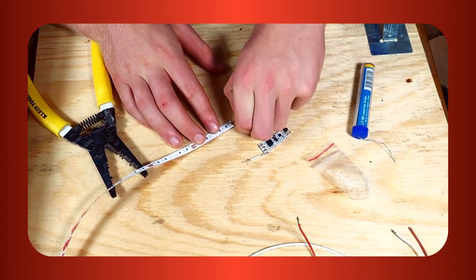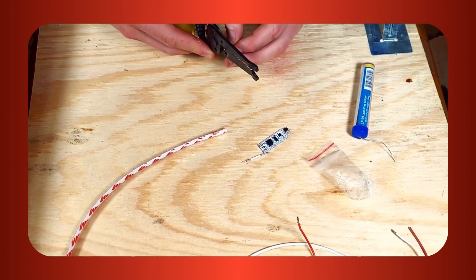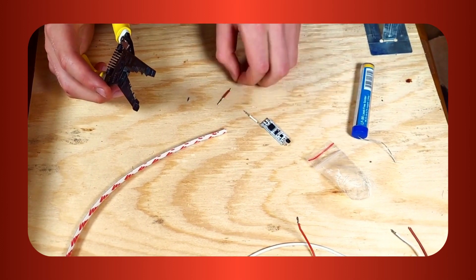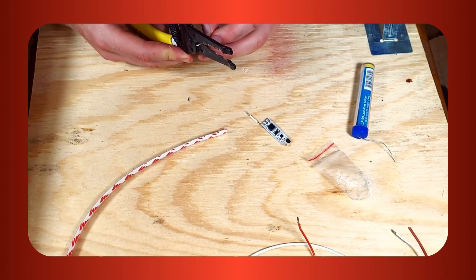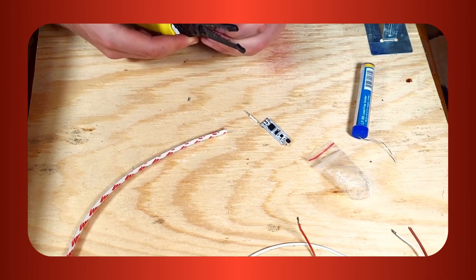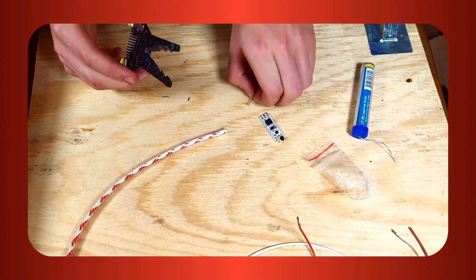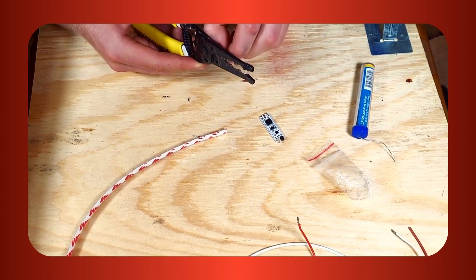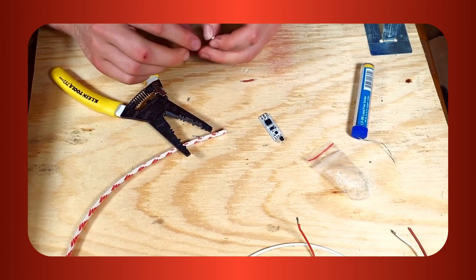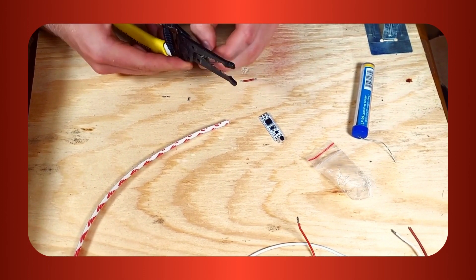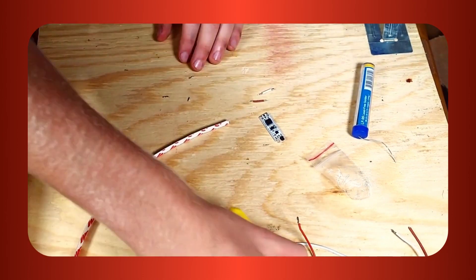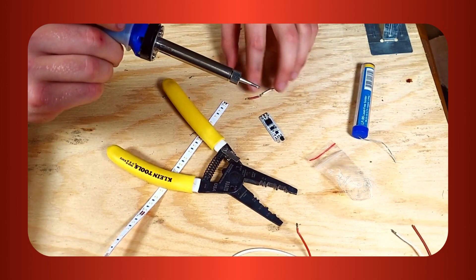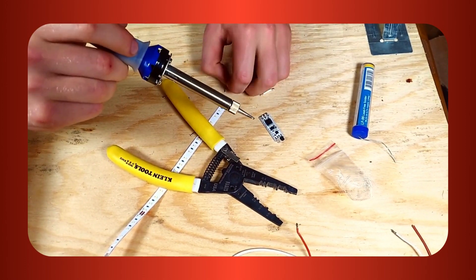When your wires are tinned, cut their ends down to a length similar to that of the pads on the strip and sensor. Great! Now let's solder the red wire onto the positive pad of the strip, and the white onto the negative.